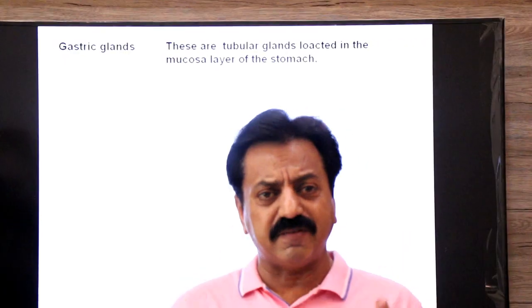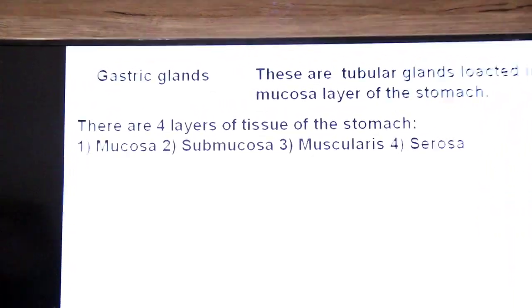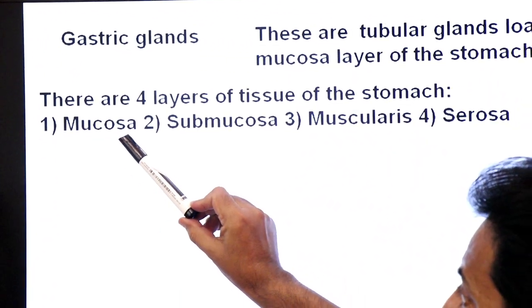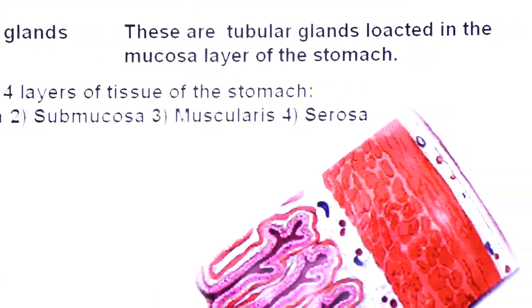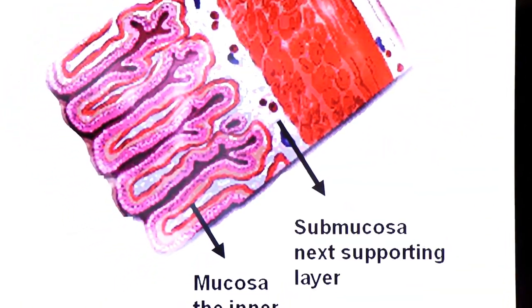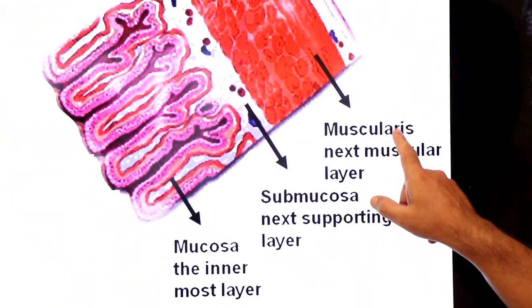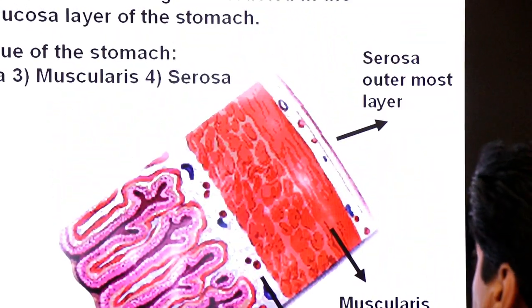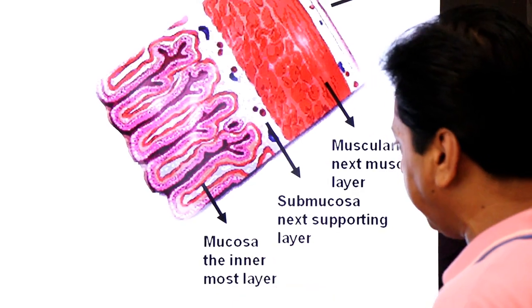To understand gastric glands, we need to know the four layers of the stomach wall — the histology of the stomach. The four layers are: mucosa (the innermost layer), sub-mucosa (the next supporting layer), muscularis (the muscular layer), and serosa (the outermost layer). The gastric glands are found in the mucosa layer.